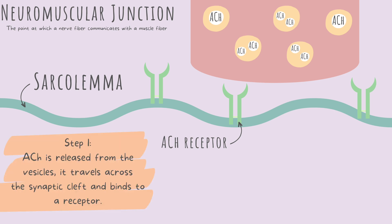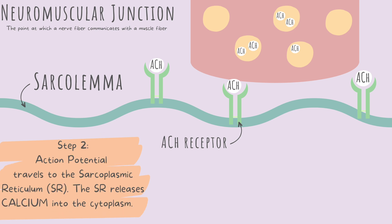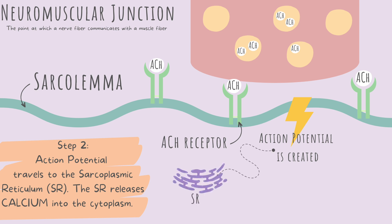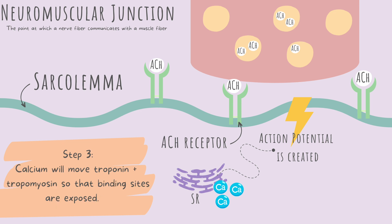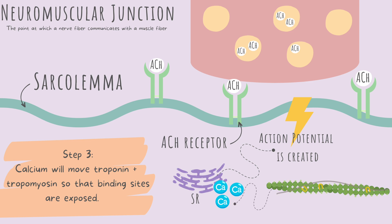Beginning with step one: ACH, or acetylcholine, is released from the vesicles. It travels across the synaptic cleft and binds to a receptor. Step two: the action potential travels to the sarcoplasmic reticulum. The sarcoplasmic reticulum then releases calcium into the cytoplasm. Step three: calcium will move troponin and tropomyosin so that the binding sites are exposed.